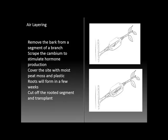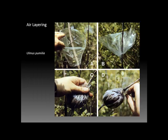One technique we're going to test out in the lab is air layering. In this process the grower removes the bark from a segment of a branch, scraping the cambium to stimulate hormone accumulation, then covering the exposed bark with moist peat moss and wrapping it with plastic to maintain humidity. Roots will form in this area in a few weeks, and once they have it's a simple matter to cut off the rooted segment and transplant it to form a new plant. This slide shows a series of photos illustrating the air layering technique for a branch of an elm tree.